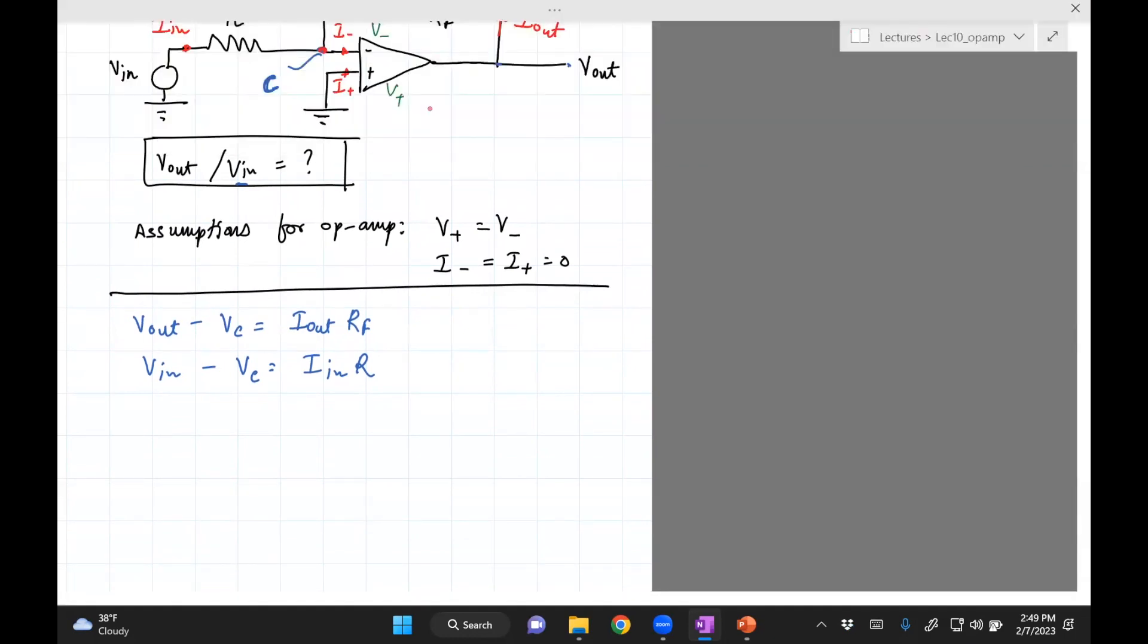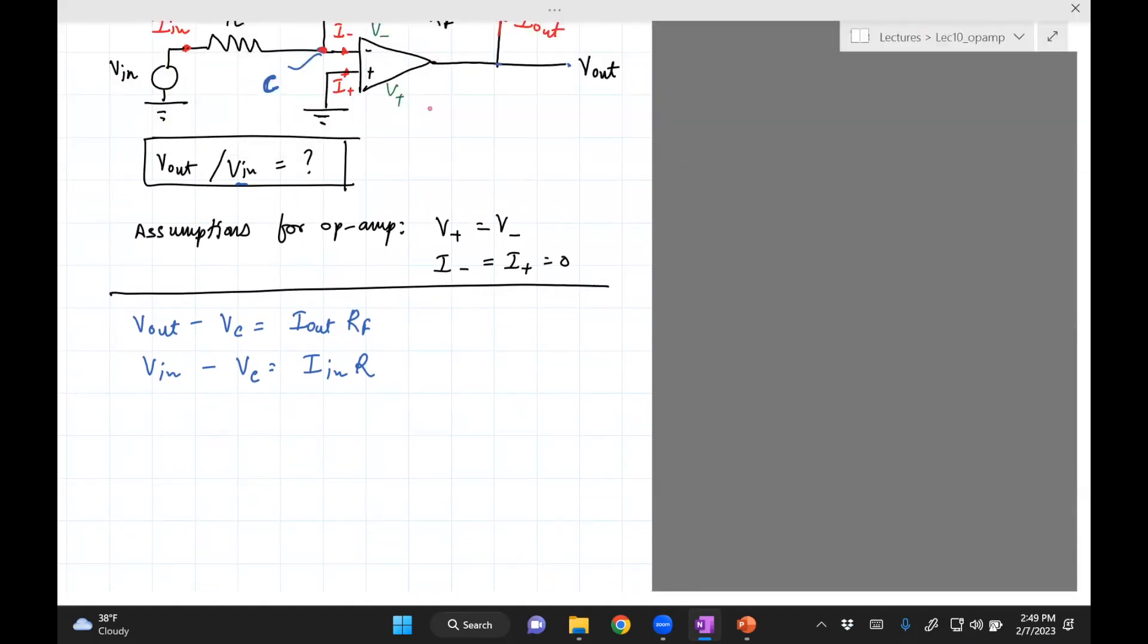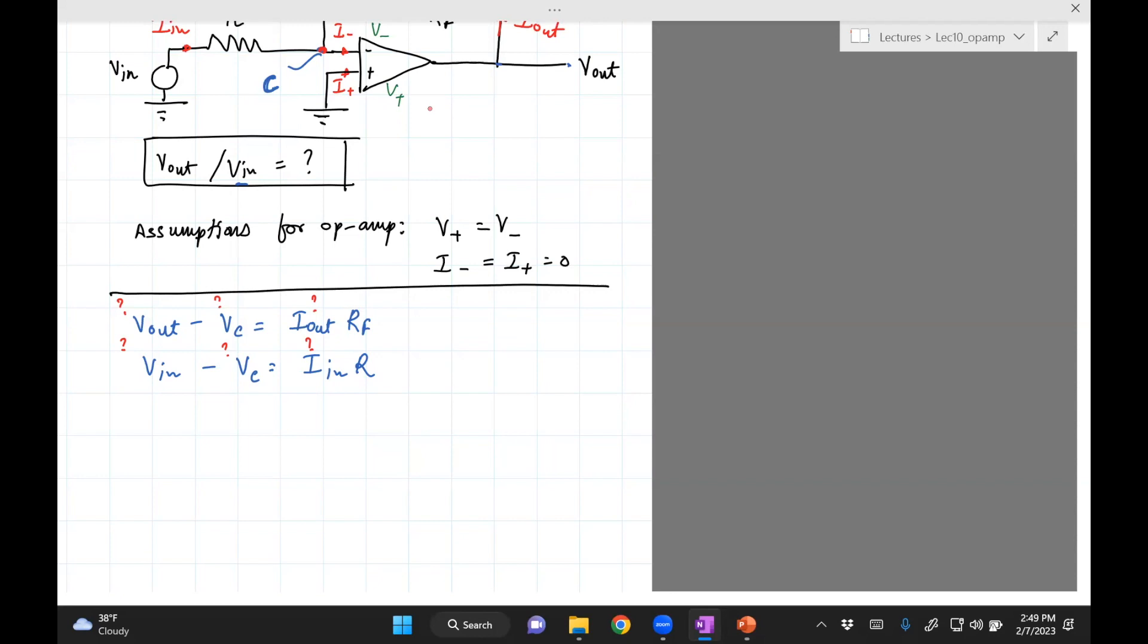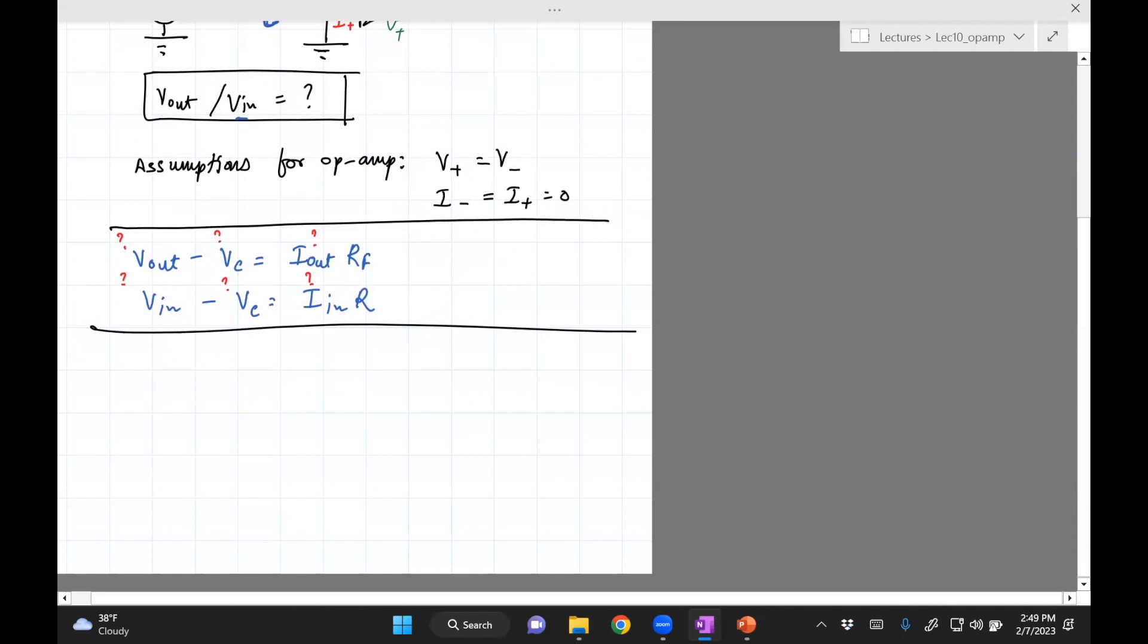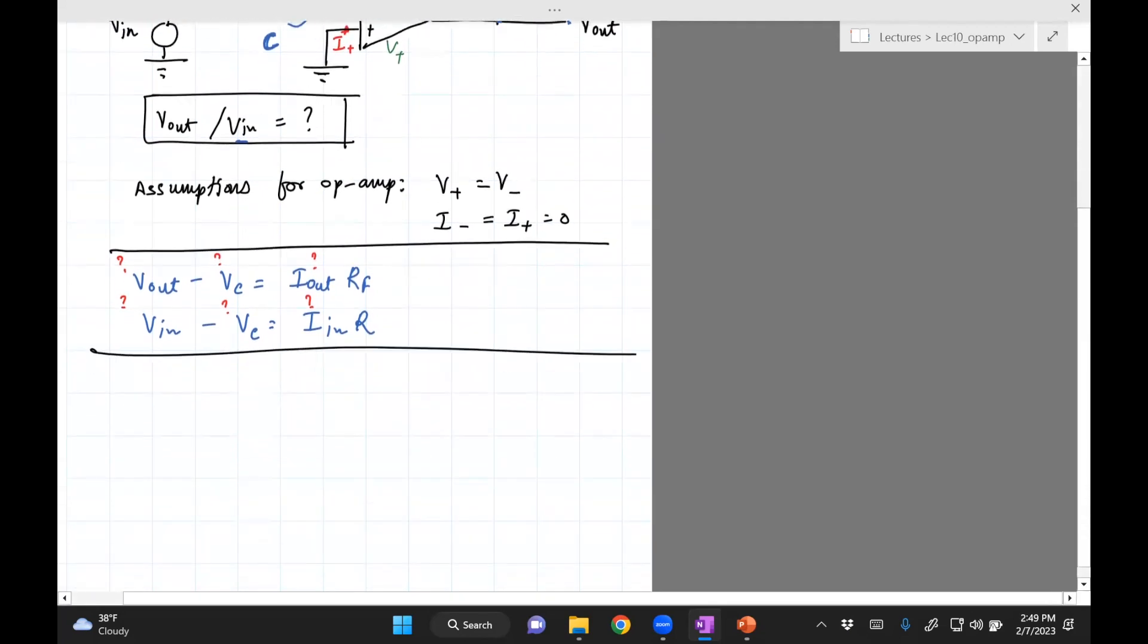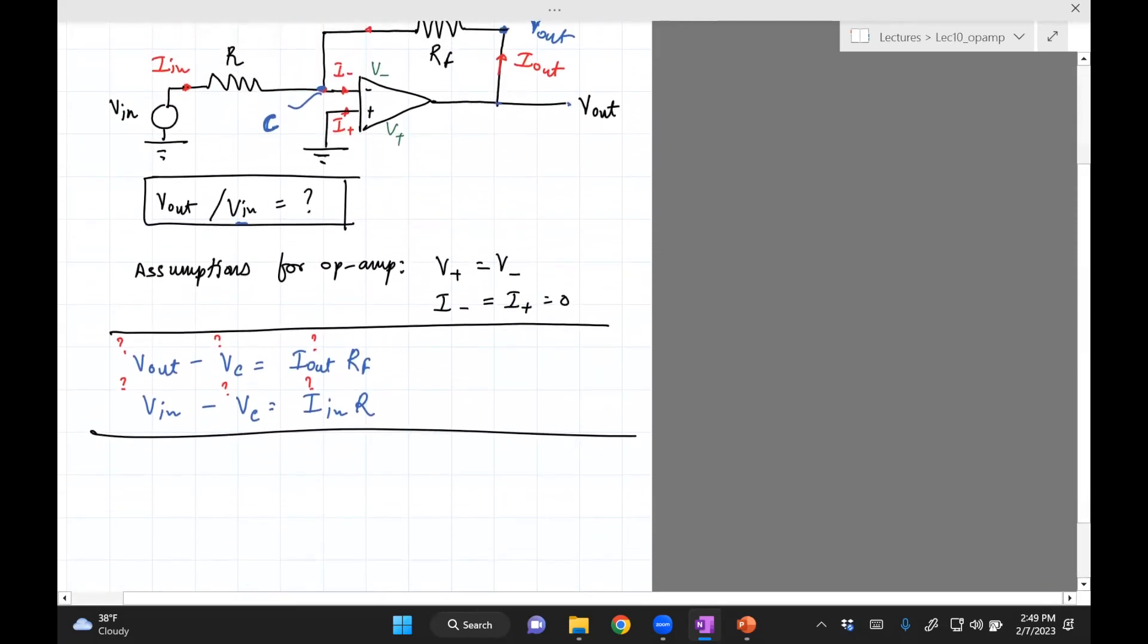So now what I'm trying to do here is figure out what this ratio is, but this is an unknown. I_out is an unknown, I_in is an unknown. So I better find formulas or compute this. I'm trying to figure out how I can write a formula for I_out, I_in, and V_C. Once I can eliminate those things, I'll have the ratio of V_out to V_in.